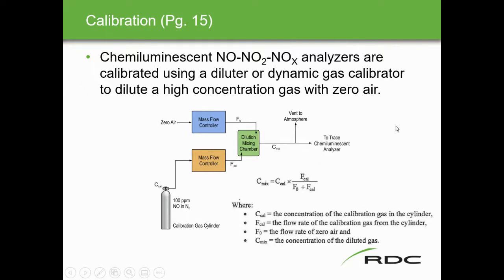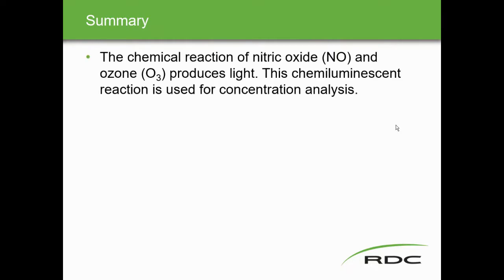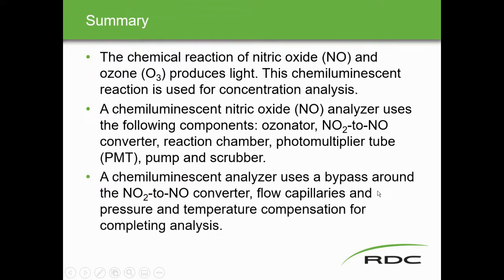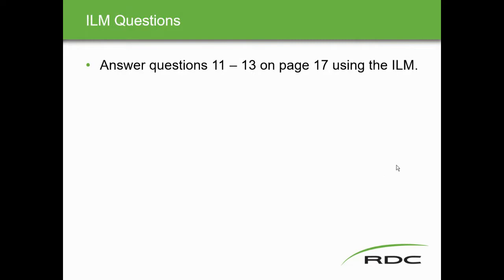Summary: the chemical reaction of nitric oxide and ozone produces light — this chemiluminescence reaction is used for concentration analysis. The chemiluminescent nitric oxide analyzer uses these key components: ozonator, NO2-to-NO converter, reaction chamber, photomultiplier tube, vacuum pump, and scrubber. By switching between NOx mode and NO mode and subtracting, we obtain the NO2 concentration.